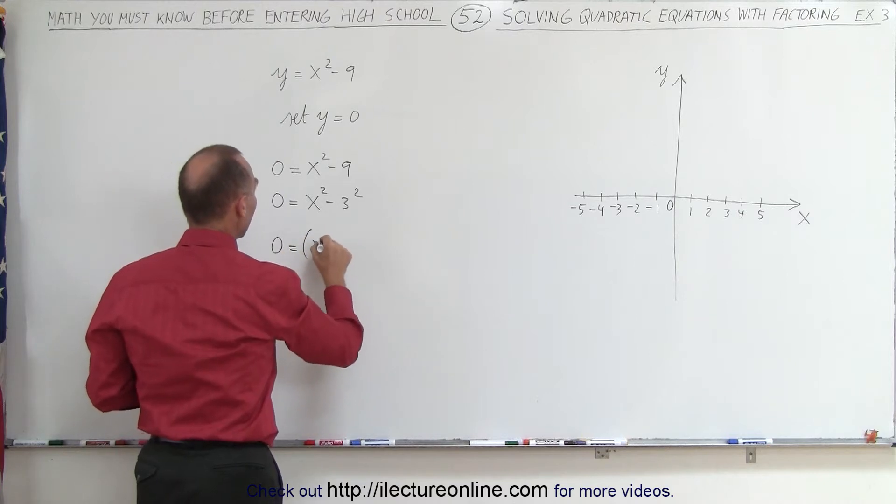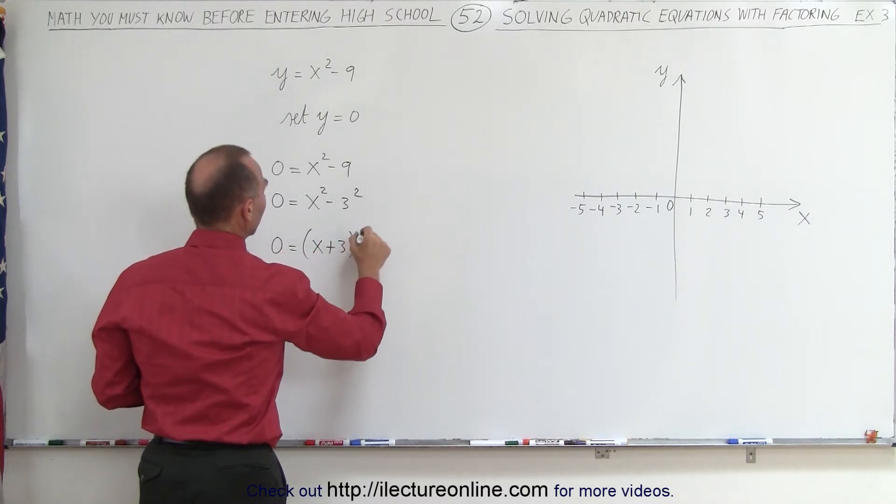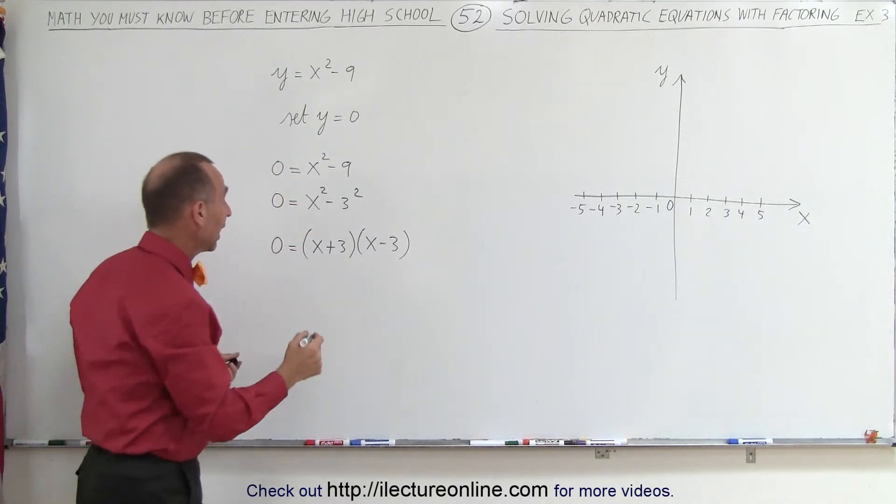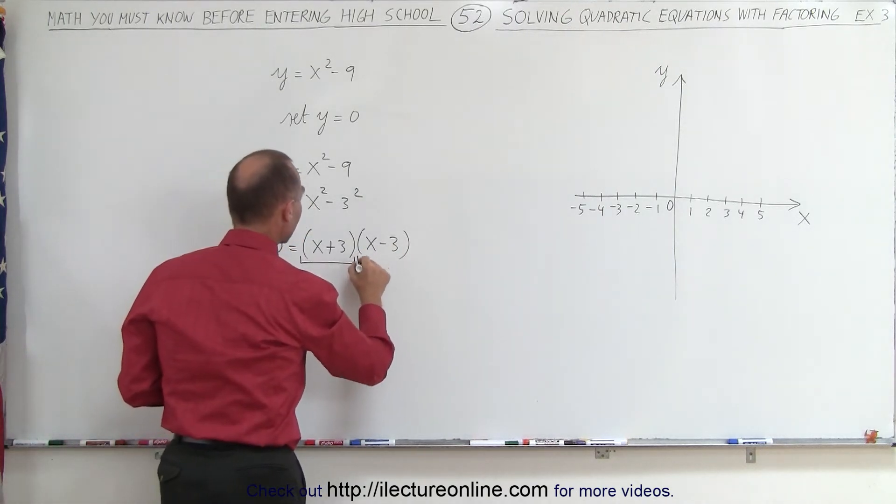0 equals the quantity x plus 3 times the quantity x minus 3. And now, again, we have two binomials that are multiplied together like this.